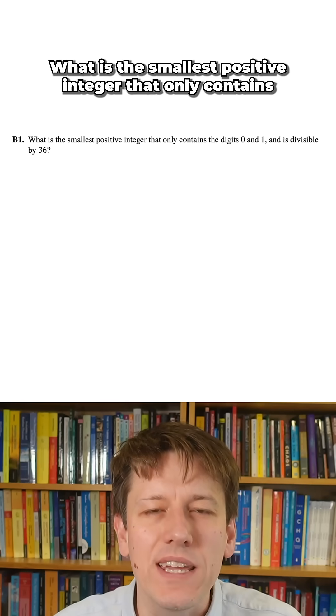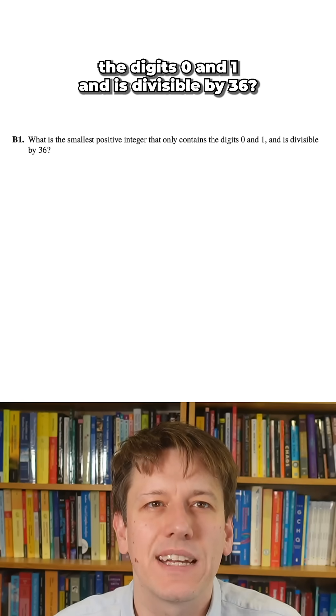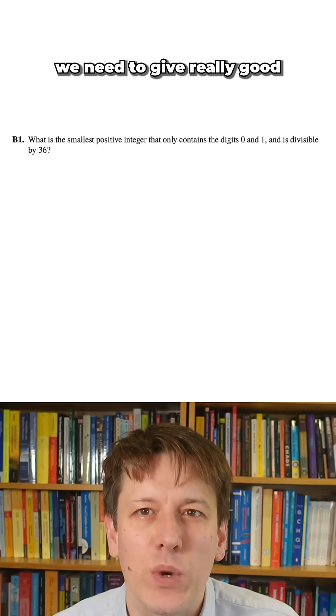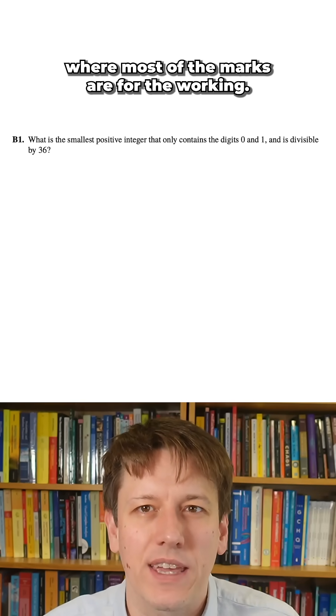What is the smallest positive integer that only contains the digits 0 and 1 and is divisible by 36? This was question B1 of the Junior Maths Olympiad from 2024. In section B, we need to give really good working as well as just an answer, because these are now 10 mark questions where most of the marks are for the working.